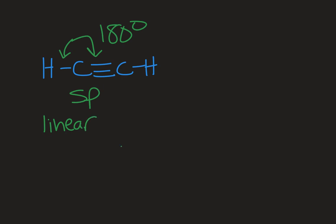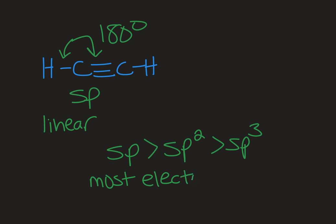With respect to hybridization, sp is the most electronegative carbon. So an sp hybridized carbon like that in an alkyne is going to be more electronegative than an sp2 hybridized carbon like what you would see in an alkene and even more electronegative than an alkane where you just have all carbons and hydrogens, no pi bonds.